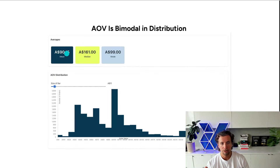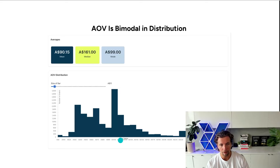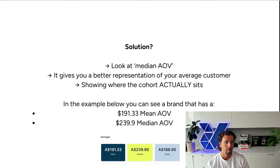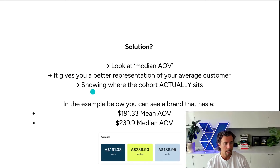If we went off mean, we would set the free shipping threshold at $100, and then all of these people — the majority of our customers — would now get free shipping on their orders, so we're losing $10 to $15 off every single $100 order. We might make $30–$40 profit on these orders, cutting profitability in half because we haven't correctly considered where the threshold offer should sit. The solution is to look at median AOV — it gives you a better representation of what your average customer actually looks like and shows where the cohort actually sits. In the example below, the brand has a $191 mean and a $240 median.